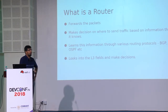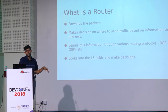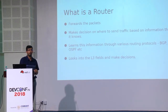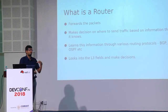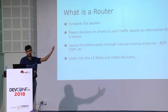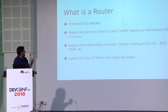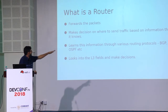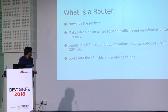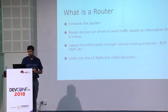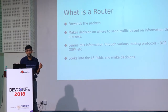Now let's talk about what a router is. In the case of a switch, it looks into the layer 2 packets, whereas a router also looks into the layer 3 packet — the source IP and destination IP — and takes a decision based on what it has learned. For example, if the destination IP address is this, forward it to this. It learns all this routing information through various protocols like BGP, OSPF, and stuff like that. So this is how traditional networking works.